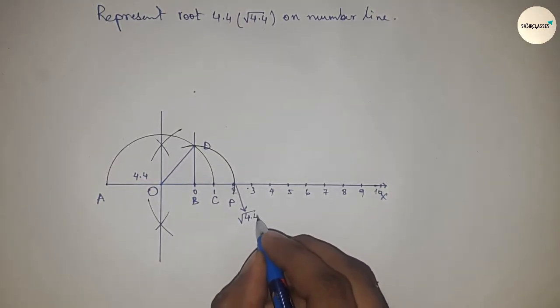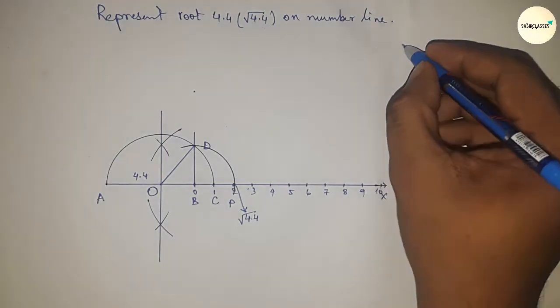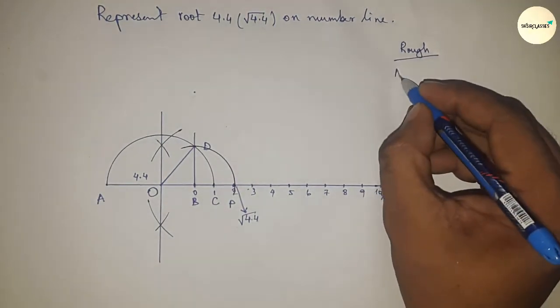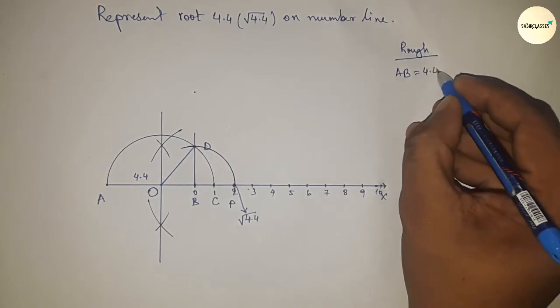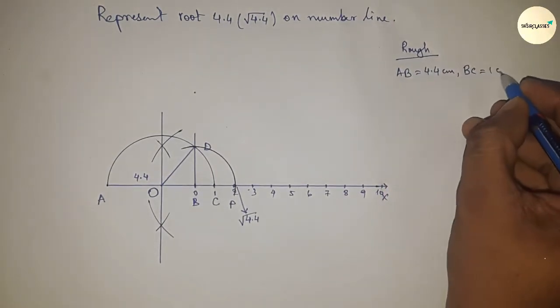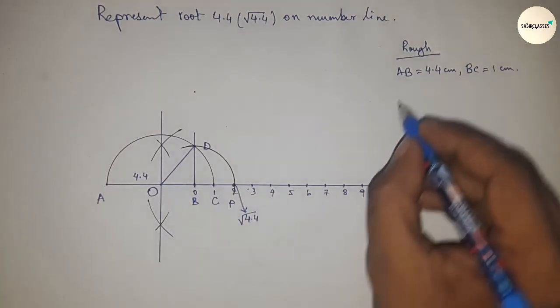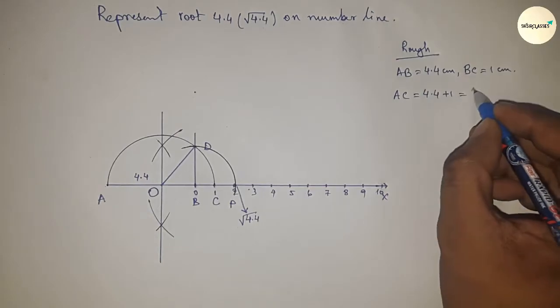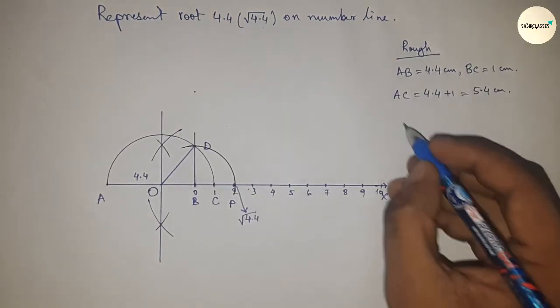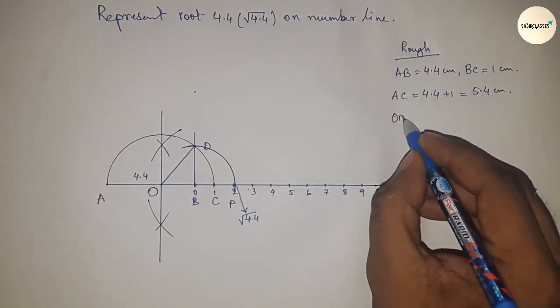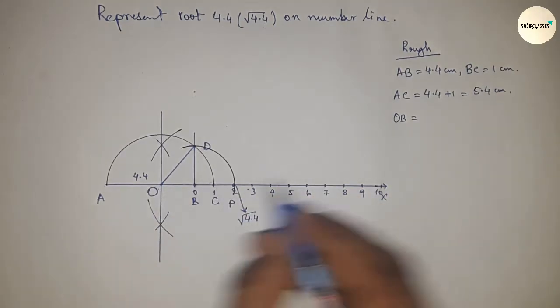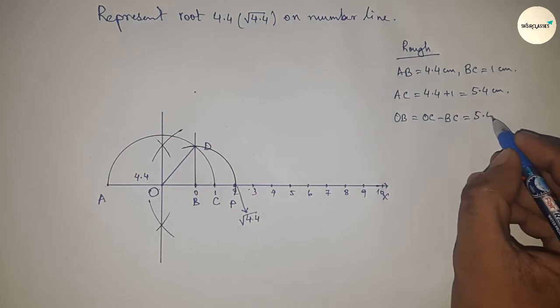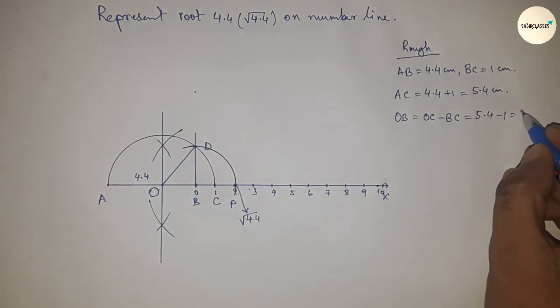Now roughly discussing the calculation. So given AB equal to 4.4 centimeter, BC equal to 1 centimeter, so AC equal to 4.4 plus 1, so 5.4 centimeter. Next, OB equal to OC minus BC, so putting the value of OC and BC.